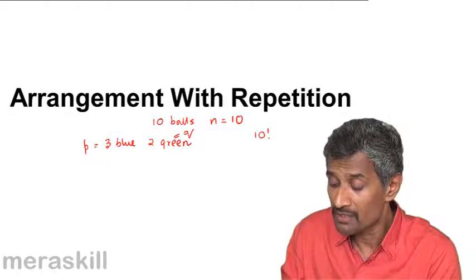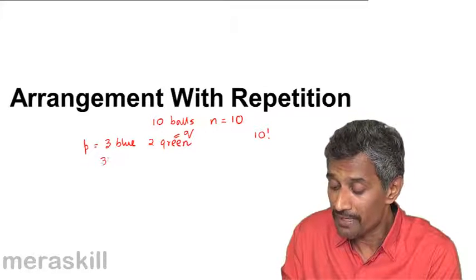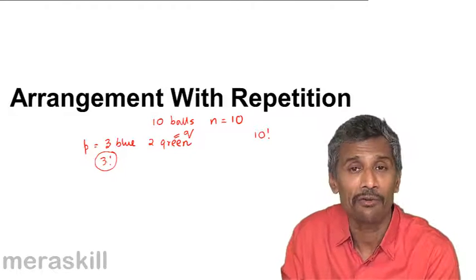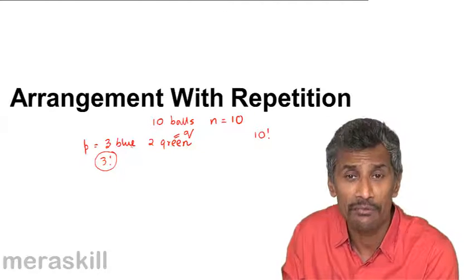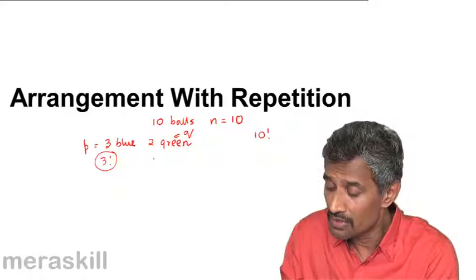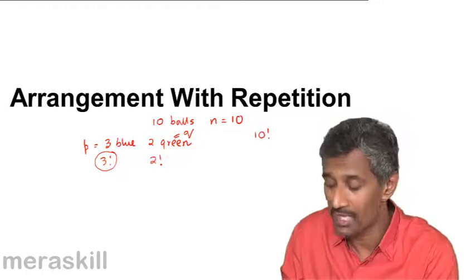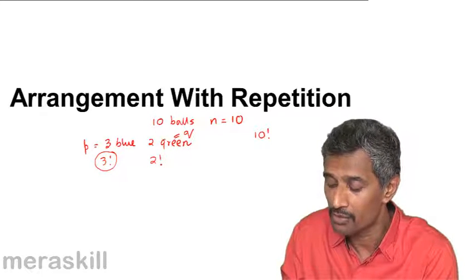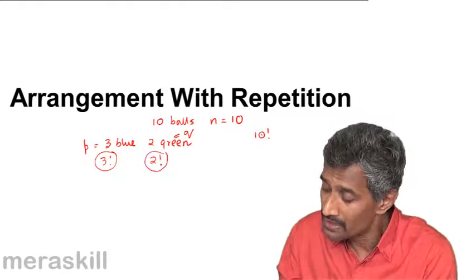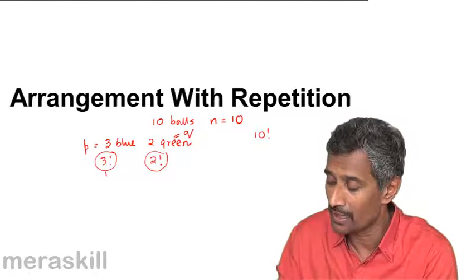The 3 blue balls within themselves can be arranged in 3 factorial ways. But all these 3 factorial ways amount to only one arrangement because you can't distinguish one blue ball from another — they don't have any distinct identity. Similarly, the 2 green balls can be arranged in 2 factorial ways, but whether you put the first or second green ball first, you can't identify them as two distinct things.